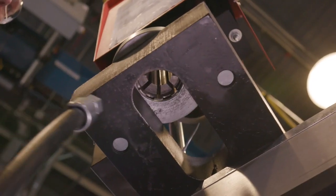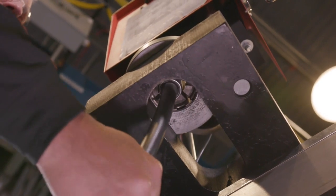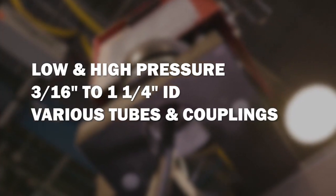Introducing the Gates PC-707 Crimper. The PC-707 crimps most hydraulic hose from low to extremely high pressure, from 3/16 to 1 and a quarter inch inner diameter, plus a variety of tubes and couplings.